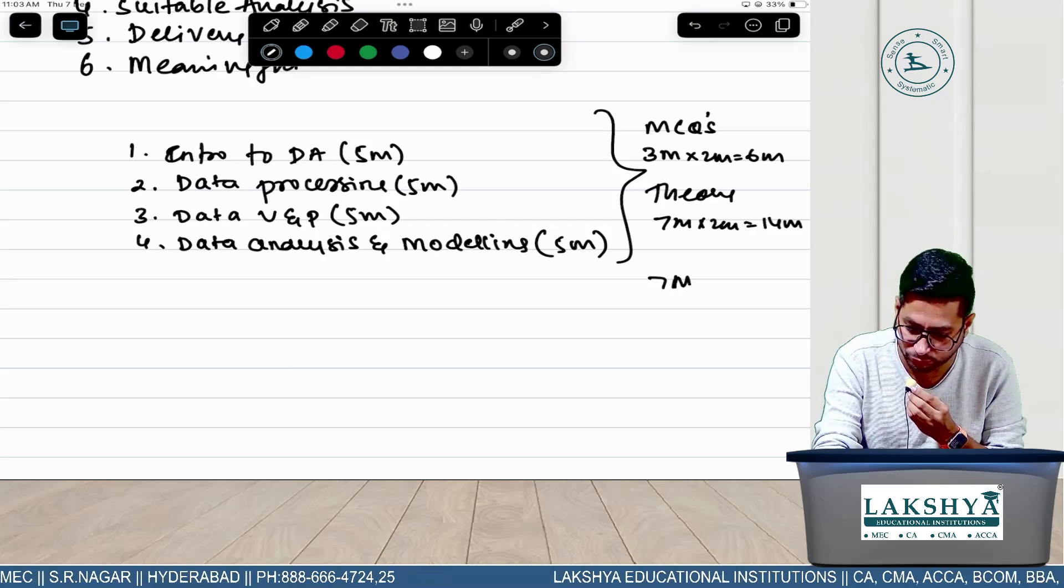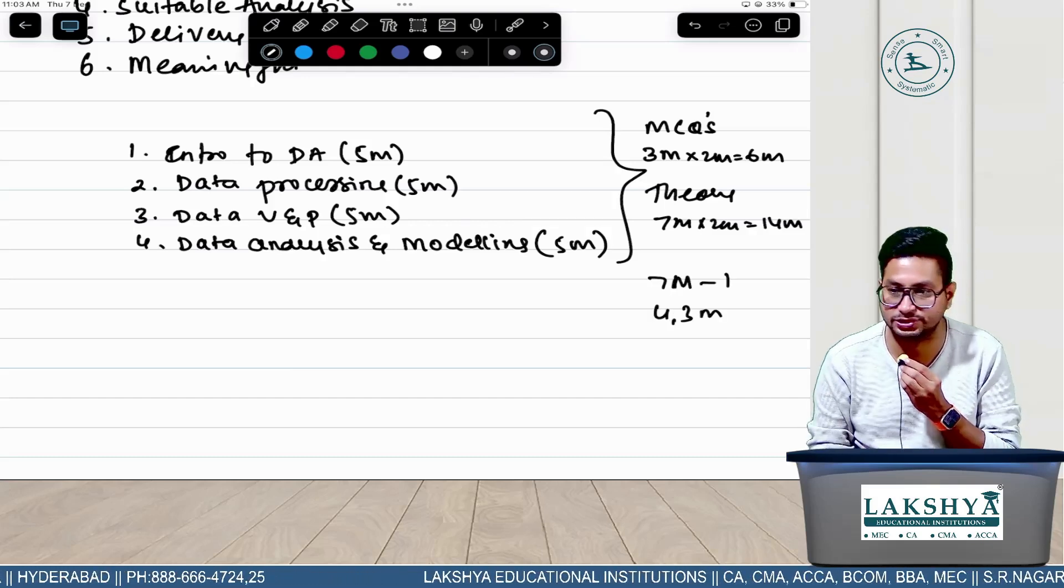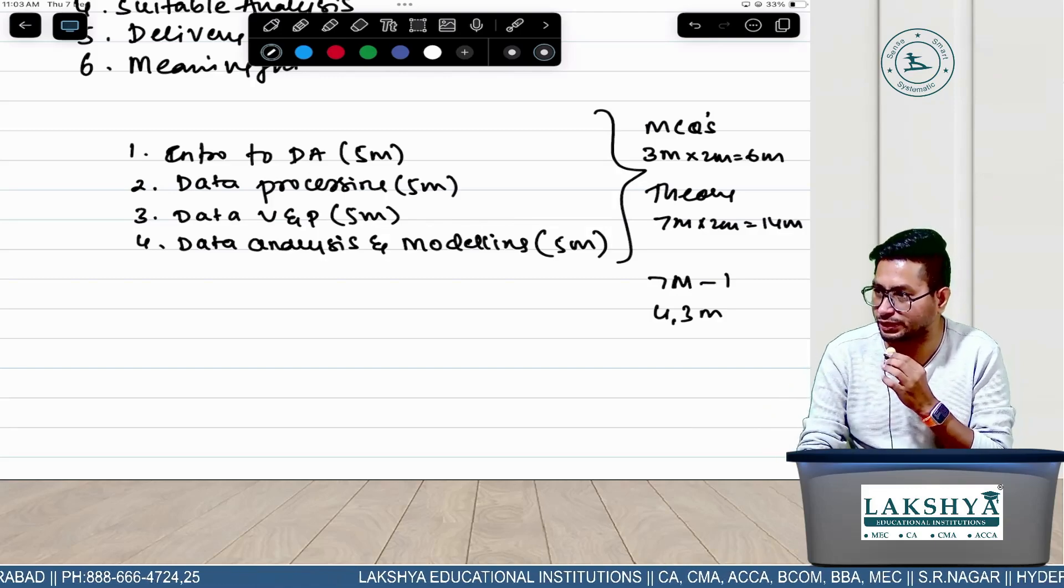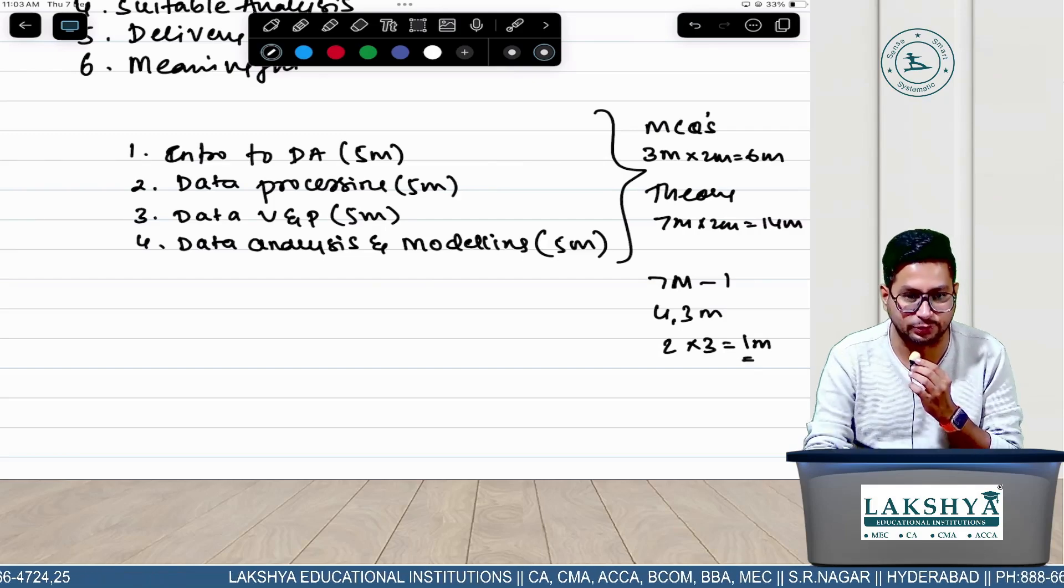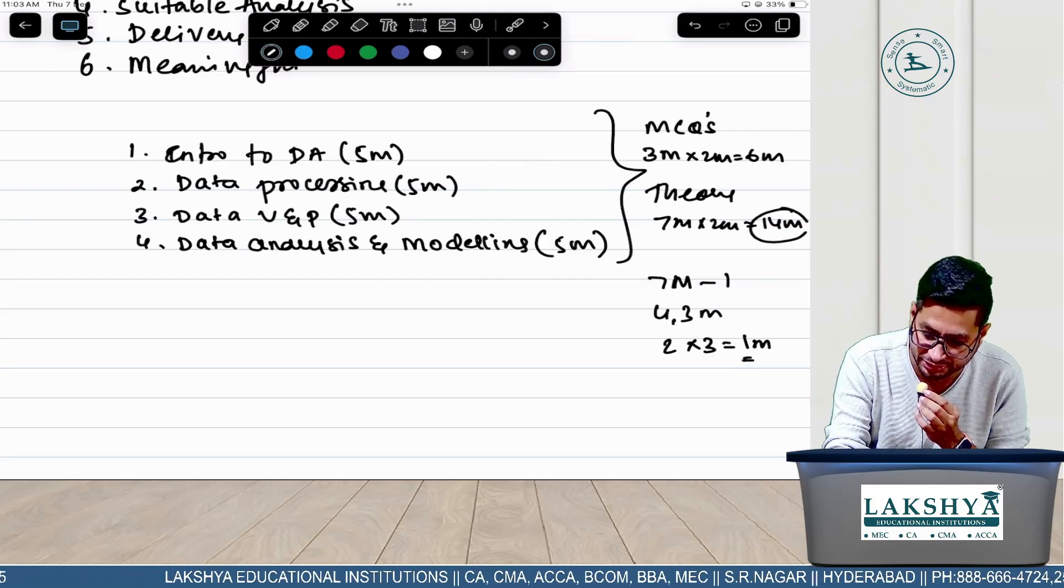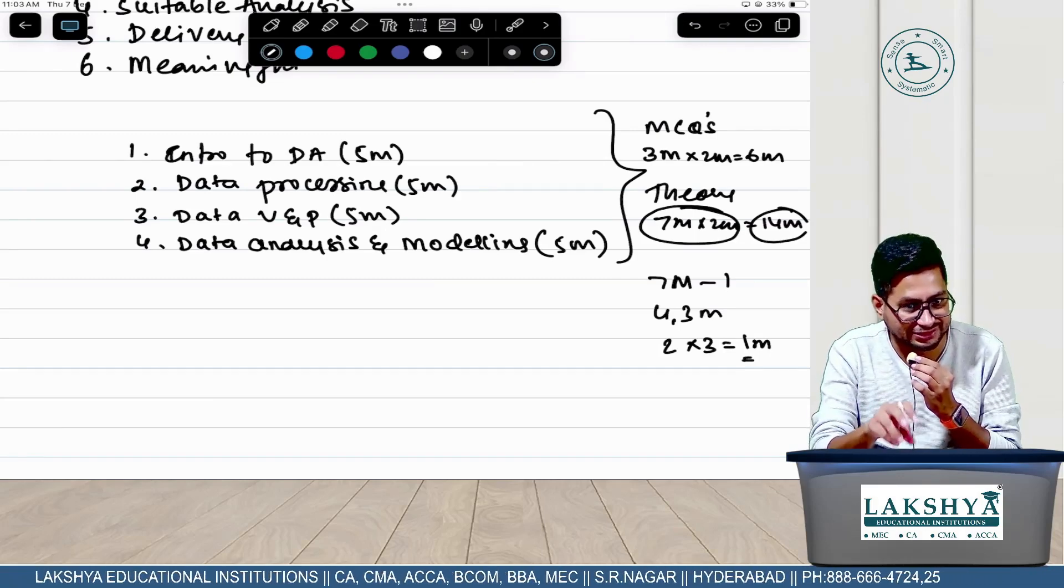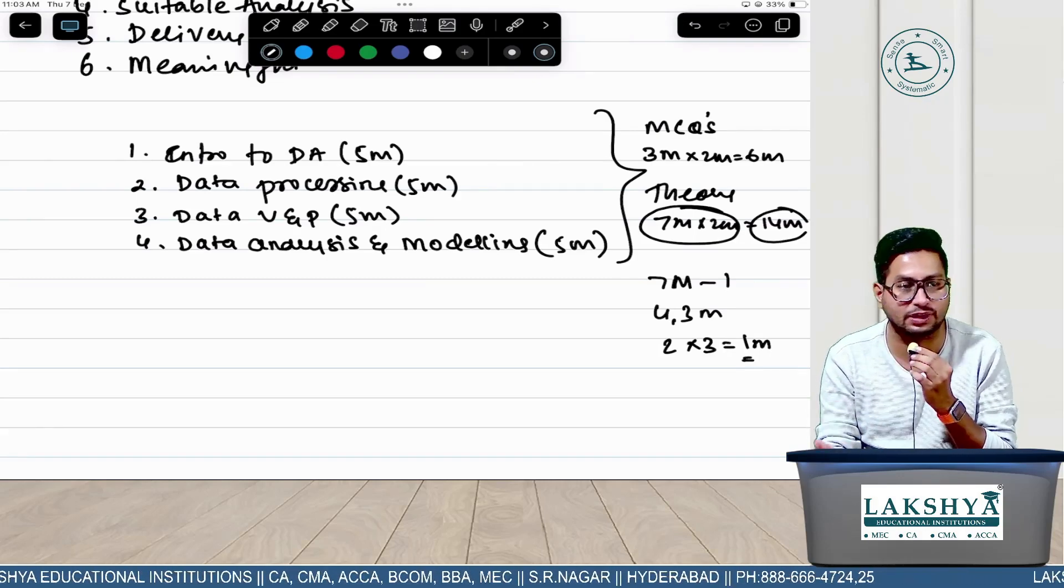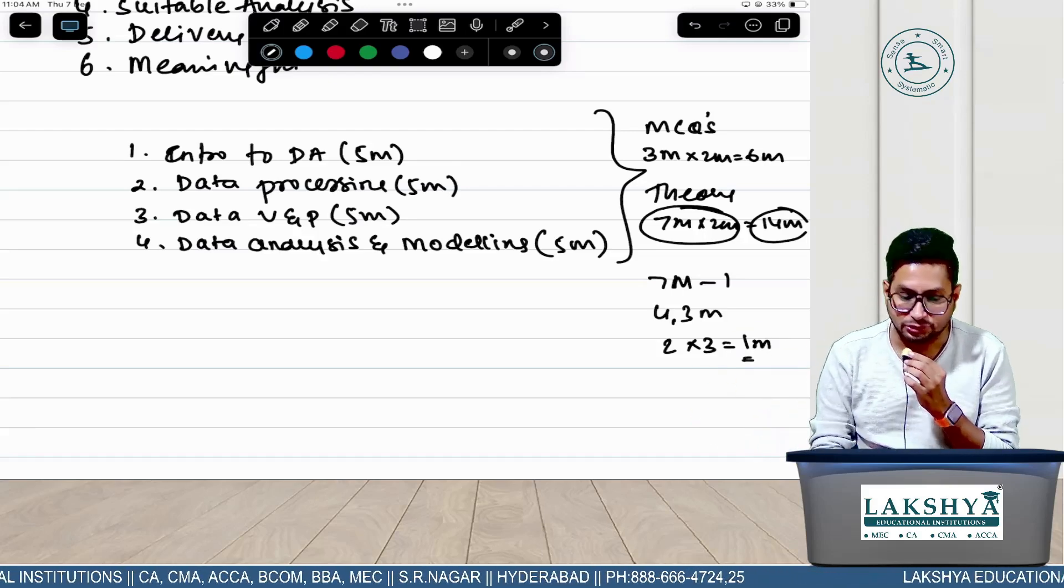They can ask 7 marks as 1 question only, or 4 marks and 3 marks as 2 questions. They can have any combination - 2 marks times 3 questions and 1 mark times 1 question equals 14 marks. Two questions are compulsory for 7 marks, but the weightage of those 7 marks we don't know.